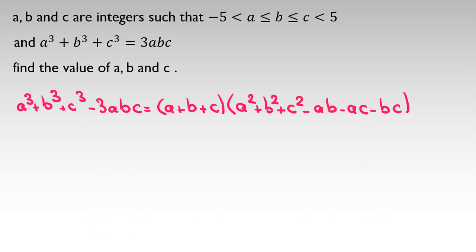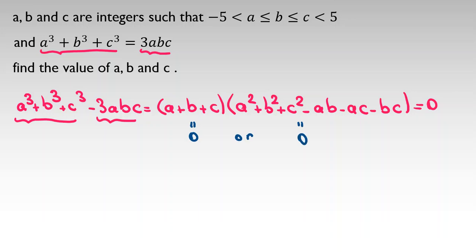Now, from the assumption of the problem, we know a cubed plus b cubed plus c cubed equals 3abc, so their difference equals 0. Therefore, the product of the two terms equals 0, meaning the first term is 0 or the second term is 0.